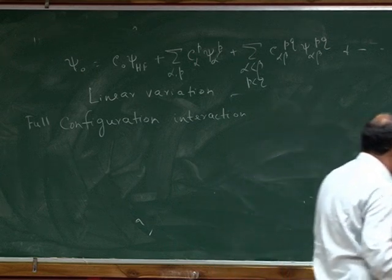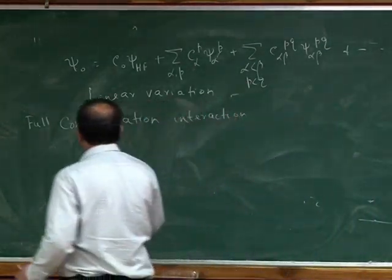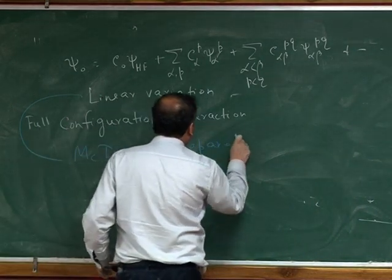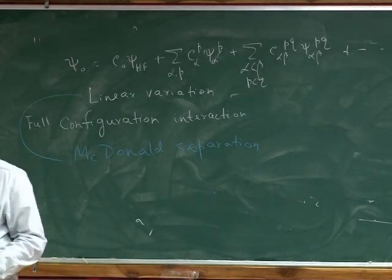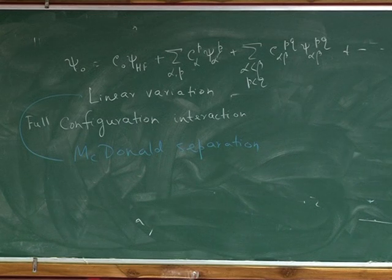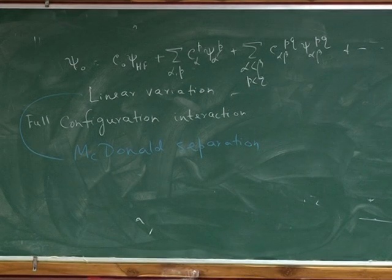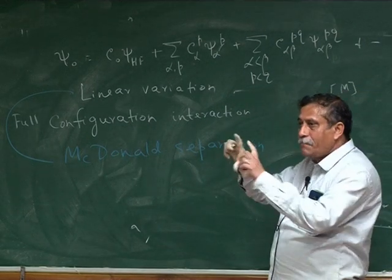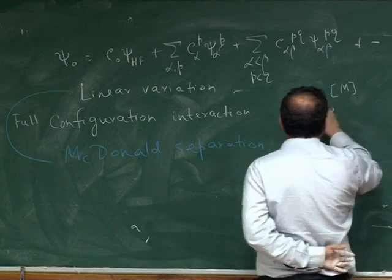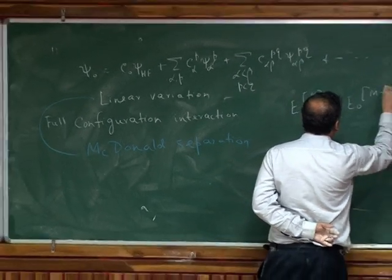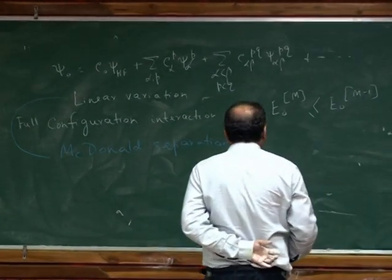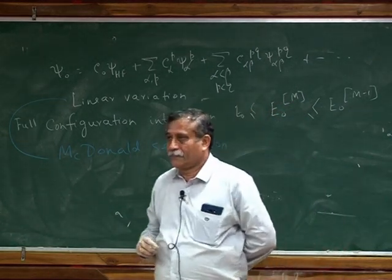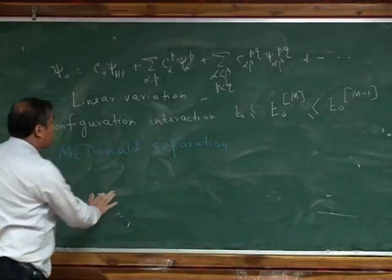All right? So in fact, if I teach this in a class, it takes a couple of hours. There's a very nice theorem for the linear variation, which is called McDonald separation. Again, those who are interested should see this, it's a Physical Review 1933. Physical Review 1933, McDonald proved a theorem for linear variation. So if you do mathematics of linear variation, it's very simple. So if I have energy, let me try to write it down, if I have energy obtained from an M basis, from an M basis, now my basis of determinants, they will always be lower than energy obtained from an M minus 1 basis. And each of them will, of course, be higher than E0.